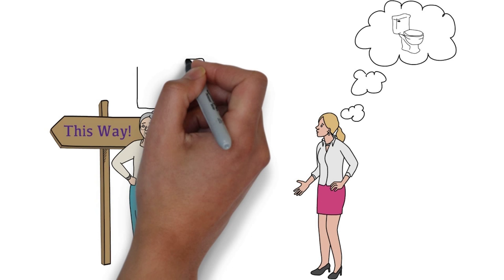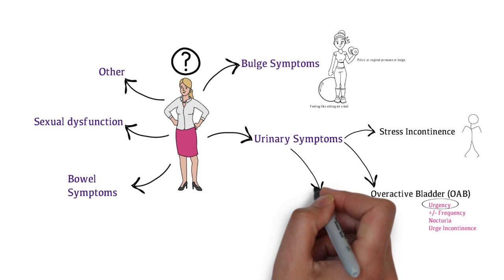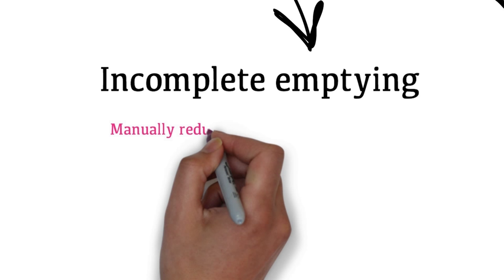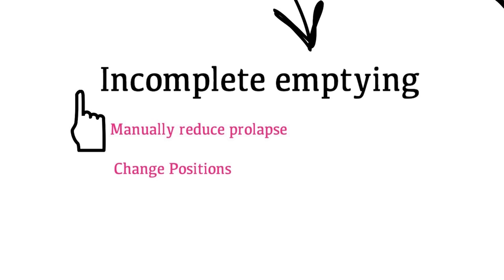There are also bathroom mapping apps available for patients to use. Patients may complain of incomplete emptying of the bladder and they manually reduce the prolapse to begin or complete voiding. They may also change positions during voiding to better empty their bladder.